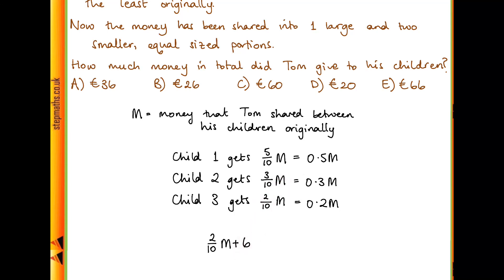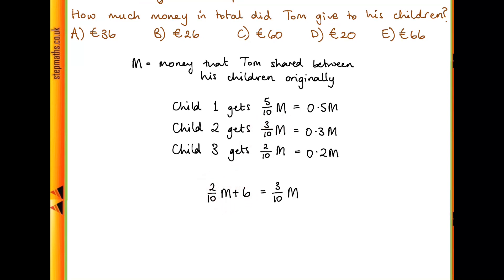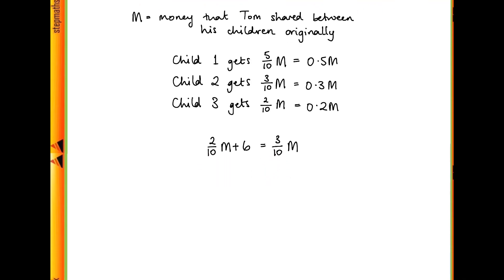But it's not the only possibility we needed to check. Now that we know that child 2 and child 3 have equal shares, we can set 2 tenths M plus 6 equal to child 2's share, which is 3 over 10 M. Now we have an equation for M which we can solve. Multiplying through by 10 — that's why I've written it in fractions rather than decimals, because it's a bit easier — I get 2M plus 60 equals 3M. Rearranging that gives us that M is equal to 60.